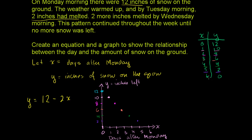And then finally on the 6th day, 6 days after Monday, so we're at Sunday now, we are going to have no inches on the ground. And you can see that there's this line that formed because this is a linear relationship. It looks a little curvy because I didn't draw it perfectly, but that is a line.